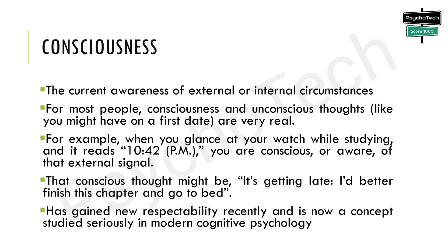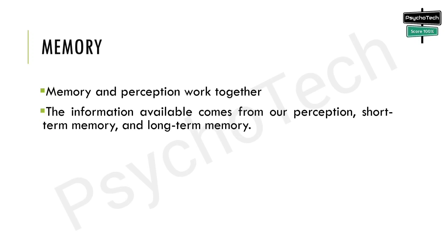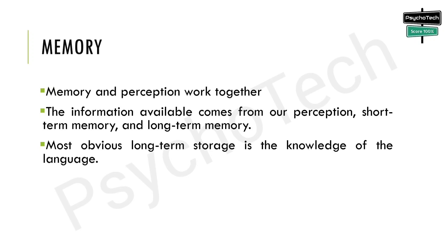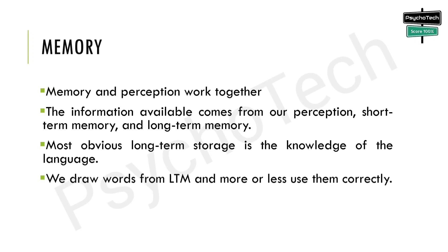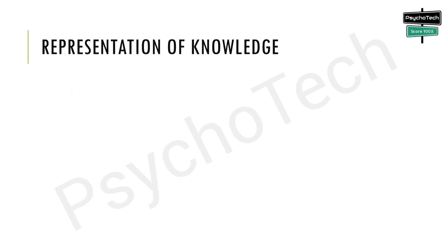Next is memory. Memory and perception work together; the information available to us comes from our perception, short-term memory, and long-term memory. The most obvious long-term storage is knowledge of language — we draw words from long-term memory and use them correctly. In a fleeting second we are able to recall information about an event from years before; such information does not come from an immediate perceptual experience but is stored along with a vast number of other facts in long-term memory.